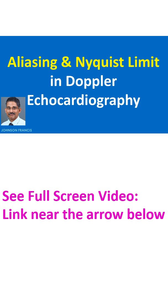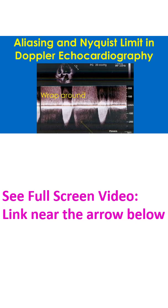Aliasing is a phenomenon in pulsed Doppler echocardiography in which, when the velocity is beyond a particular limit known as the Nyquist limit, the direction of flow is depicted as opposite to that of the actual one. The Nyquist limit is half the pulse repetition frequency of the ultrasound signal emitted by the Doppler transducer.